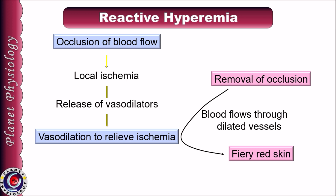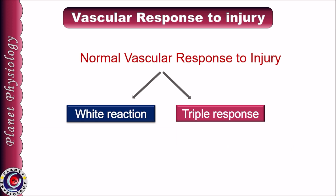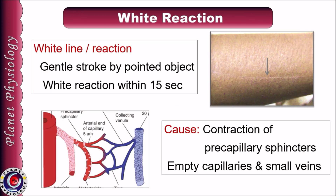Cutaneous blood flow also changes in response to injury to the skin, manifesting as white reaction or triple response. If a gentle stroke is applied to the skin by a pointed object, within 15 seconds a white line develops along the line of the stroke — called the white reaction. It occurs due to contraction of precapillary sphincters, which empty capillaries and small veins in the region of the stroke, stopping blood flow and producing a white line.